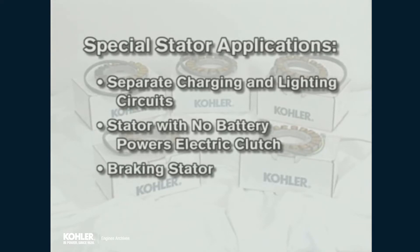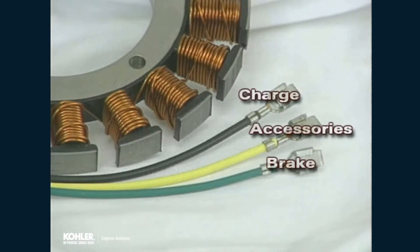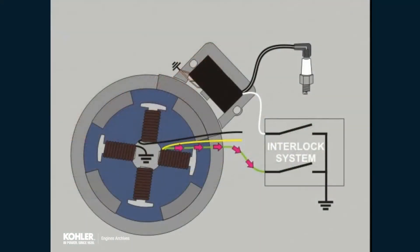Another special stator application is the braking stator, used on some lawn tractors. To bring the engine and cutting blades to a stop in accordance with safety standards, the tractor interlock system sends the braking stator circuit to ground at the same time the ignition is cut off. The added load of the braking stator reduces the coasting time of the engine and blades if the operator leaves the seat.